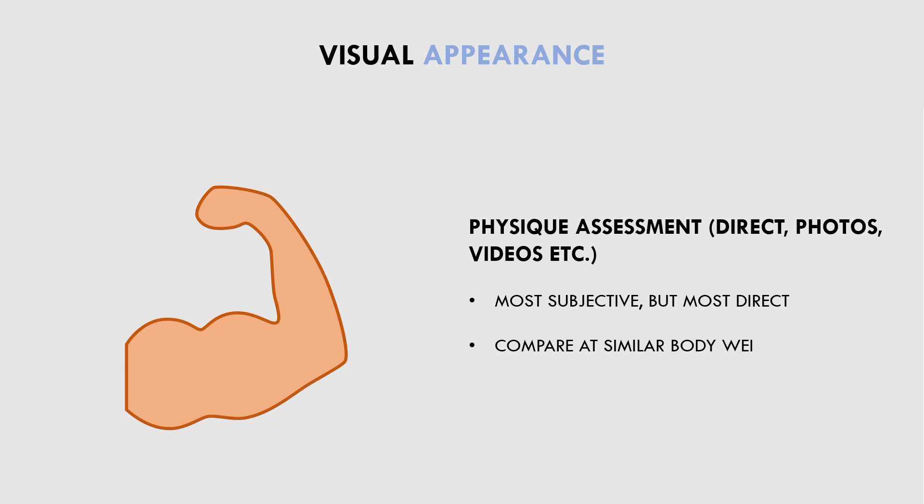Visual appearance should only really be compared between similar body weights. If a trainee goes through a massing phase, they may have gained some muscle, but they will obviously have much more body fat covering this muscle, so we can't really compare this look to when the trainee is lighter and leaner. We should also be aware that it generally takes a long time to see significant changes in body composition for trained lifters. For novice trainees, visual progress may be seen on a weekly basis, but for advanced lifters, it may take multiple years to see any noticeable differences in their physique. So for most trainees, we shouldn't be comparing our physique on a week-to-week basis — rather it should be on a multi-month or yearly basis.